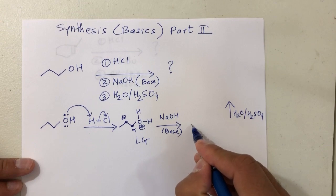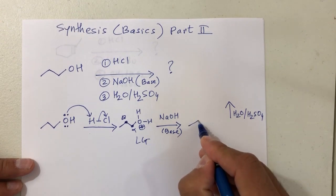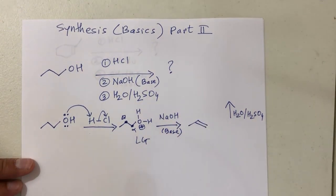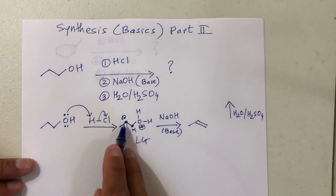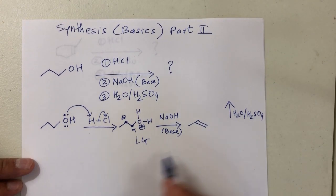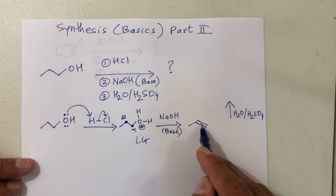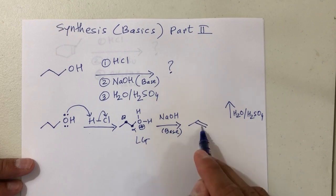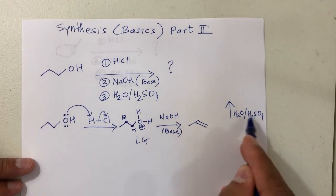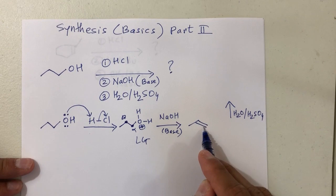If I do elimination, there will be a double bond between alpha and beta — that's your elimination product. Once you have your double bond, that product will then react with H2O and H2SO4.